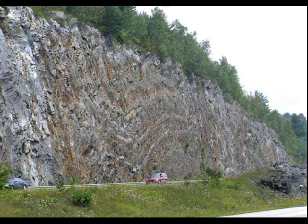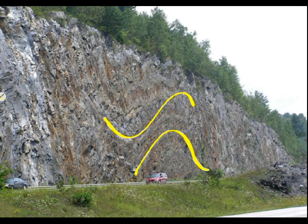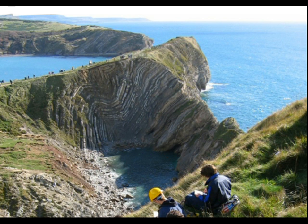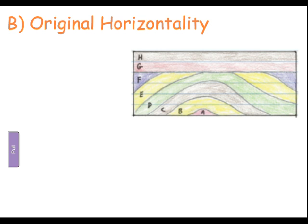Rock layers are always deposited in nice horizontal layers, but they don't always stay that way. We can see these beautiful sedimentary rocks in layers, but something's happened — the layers have been bent and folded. They were originally deposited horizontally, but because of tectonic forces they get bent and form anticlines and synclines. This is the idea of original horizontality: originally the rocks are horizontal. Deposition of rock layers A, B, C, D, E, and F happened first, then there was some folding, then G, H, and I.